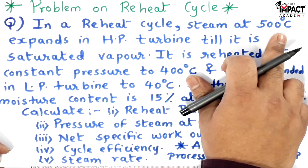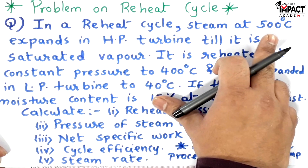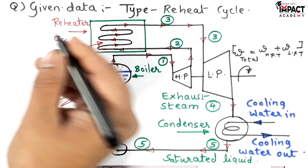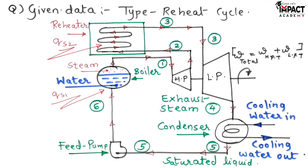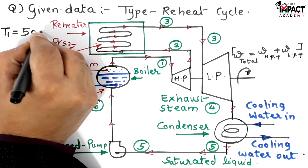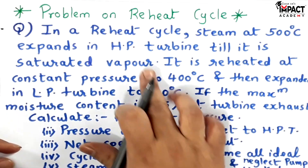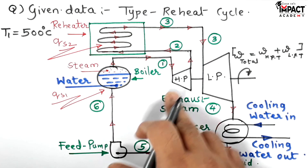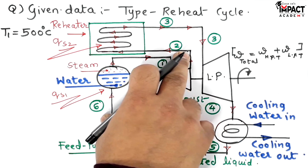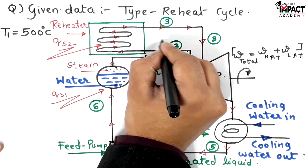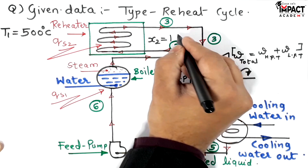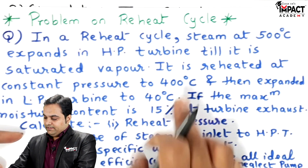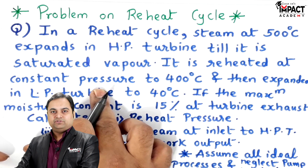In a reheat cycle, steam at 500 degree Celsius expands in the HP turbine, so the initial temperature T1 is 500 degree Celsius. It expands in the HP turbine till it is saturated vapor — the dryness fraction at point two equals one, meaning it is completely dry. The condition of the steam at the exit of the HP turbine is dry saturated. Next it is reheated at constant pressure.